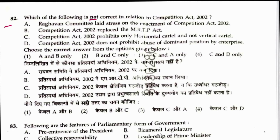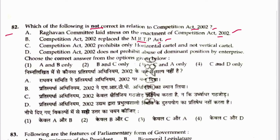Question 82: Which is not correct in relation to the Competition Act? Raghavan Committee laid the foundation for enactment of the Competition Act — correct. Competition Act replaced the MRTP Act — correct. It prohibits only horizontal cartel and not vertical cartel — wrong, it prohibits all types. Does not prohibit abuse of dominant position — wrong. So options C and D are not correct. Answer is 4.